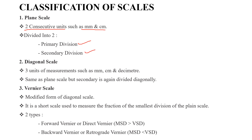The next type of scale is the diagonal scale. The diagonal scale represents three units of measurements, such as millimeters and centimeters. It has a secondary feature and Vernier subdivisions.